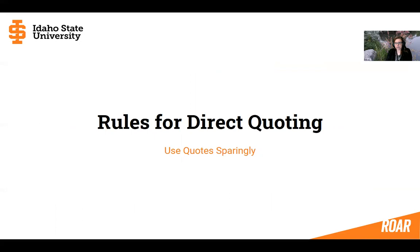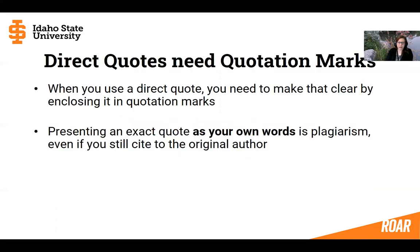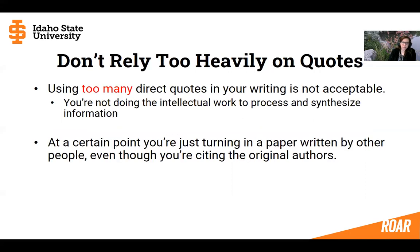Here are some rules for direct quoting, and the first thing you should know is you really want to use it sparingly — only when you really need to. When you use someone else's exact words, you need to enclose those words in quotation marks. Presenting an exact quote as your own words is plagiarism, even if you still cite the original author. If you don't put double quotes around it to make it clear they said it and you're just repeating it, that is still plagiarism. But you should also know that using too many direct quotes in your writing is not acceptable either, because at a certain point you're just turning in a paper written by other people that you've cobbled together in a series of direct quotes. You're not making the ideas your own or expressing an original point — just putting together a patchwork of direct quotes, and that's not acceptable.